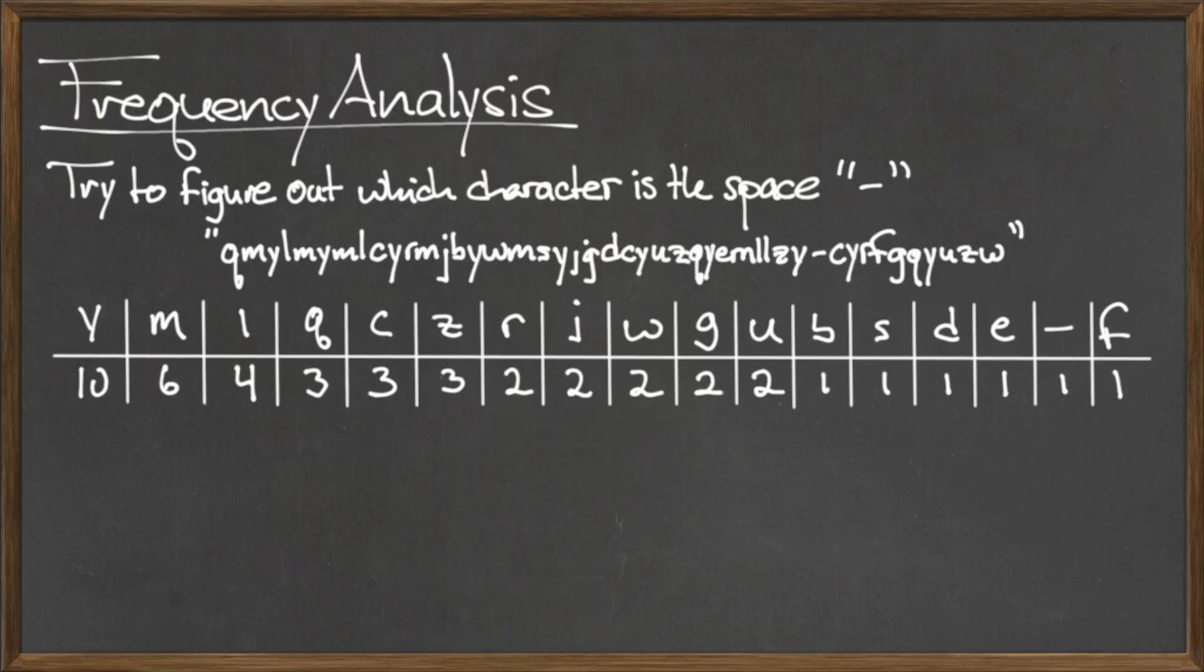By counting the characters in the ciphertext she intercepted from Alice, Eve finds that there are ten Ys, which is significantly higher than any of the other characters that appear.